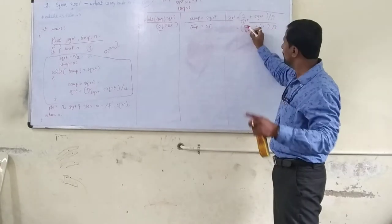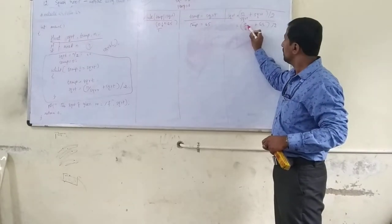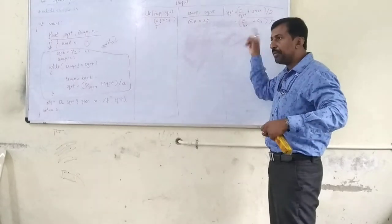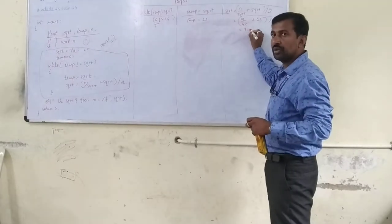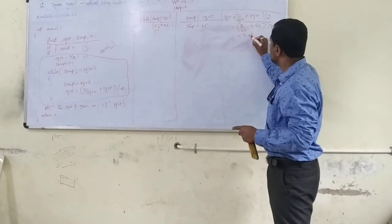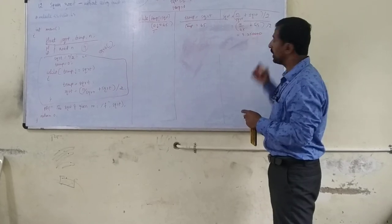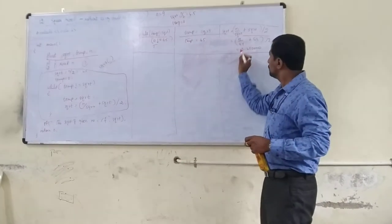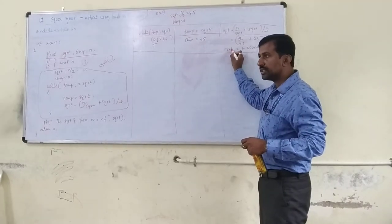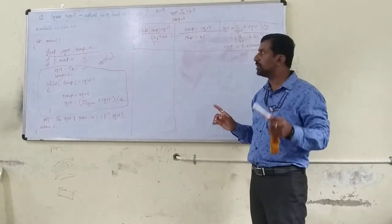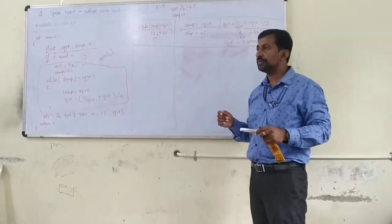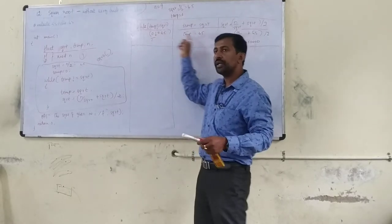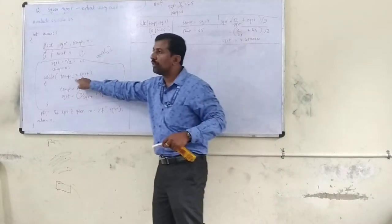First iteration is over. We observe that temp and sqrt values are updated. Previously temp was 0, now it is 4.5. sqrt was 4.5, now it is 3.25. These updated values are checked in the while loop a second time. Second time: temp is 4.5, and 4.5 not equal to 3.25 — condition is true. So we execute the two statements again. sqrt (3.25) is assigned to temp. Then sqrt = (9/3.25 + 3.25)/2, which gives approximately 3.009615. This is assigned to sqrt.